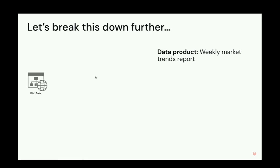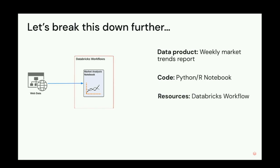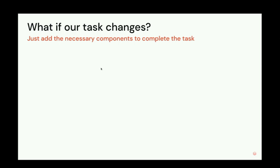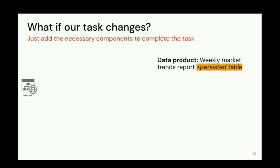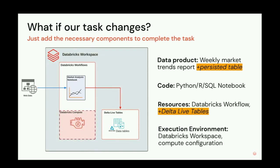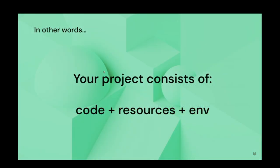Let's take a case here: our data product is a weekly market trends report. We write our code in a Python or R notebook, and we use Databricks Workflows to automate this. The execution environment is the compute we run that workflow on and the workspace. Now, if the task changes, the components also change. If our teammates ask us to save data as a table, now in addition to our Databricks Workflow, we'll use Delta Live Tables. So as the project evolves, the components involved also change. The anatomy of your work in Databricks can be summarized as: your code, your resources, and the execution environment.